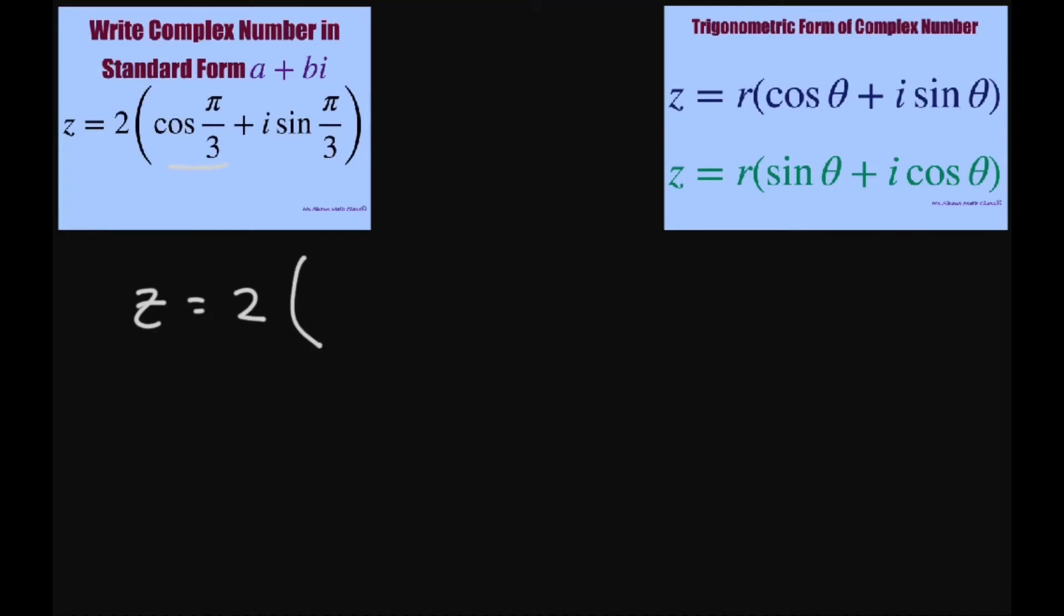We already know that cosine of pi divided by 3 is 1 half. And then sine of pi divided by 3 is square root of 3 divided by 2, and then you have the i. When you distribute, you're going to get 1 plus square root of 3i.